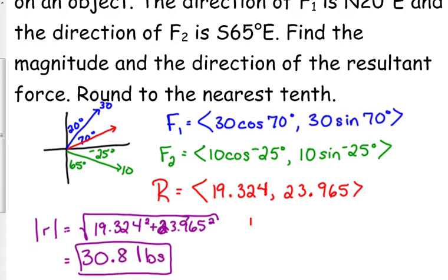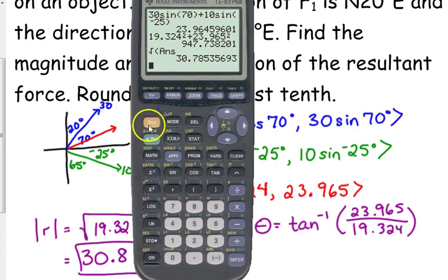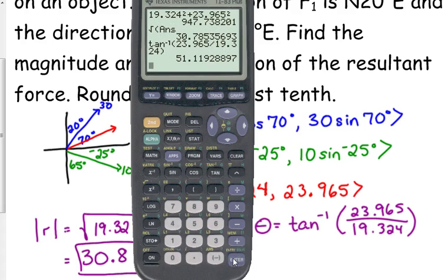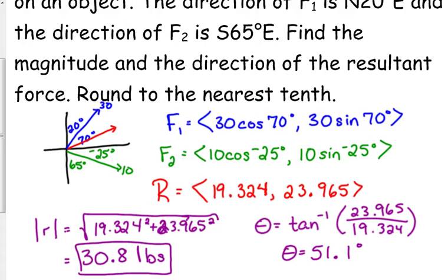The last thing we've got to figure out is the direction. So we want to do the inverse tangent. Our angle is equal to the inverse tangent of our y over our x. And that gives us an angle of 51.1 degrees. Do we have to do anything to that? No, we do not because our resultant vector is in the first quadrant. 51.1 degrees is in the first quadrant as well. So we're good in those reports.